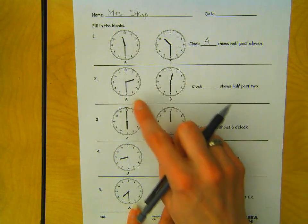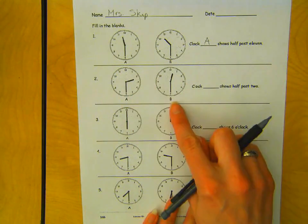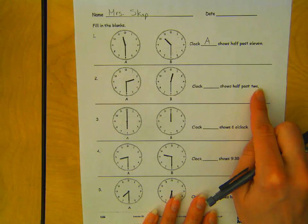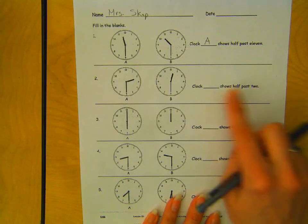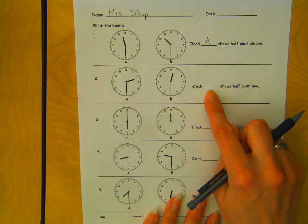So number two, here's A, here's B. Clock blank shows half past 2. Go ahead and write either A or B, whichever one is showing half past 2.